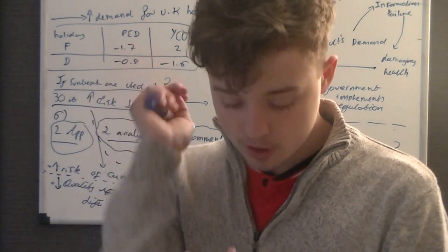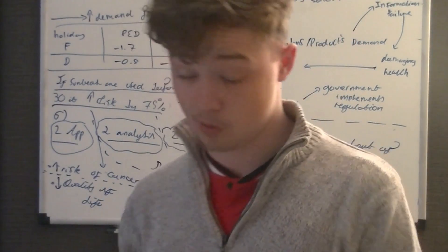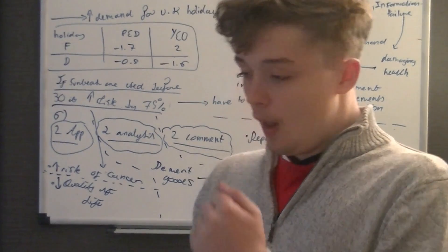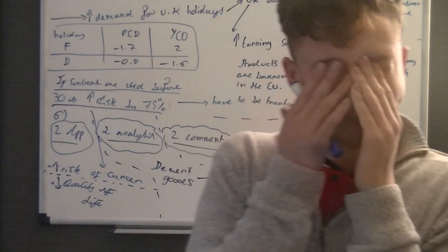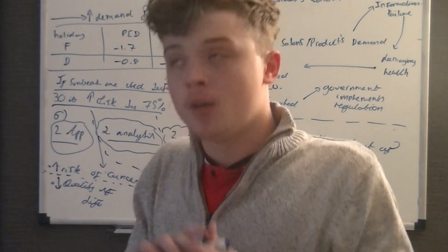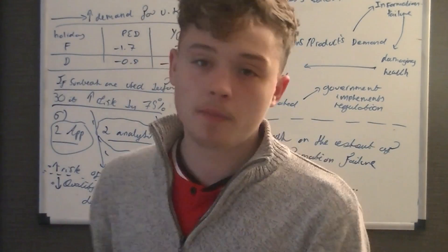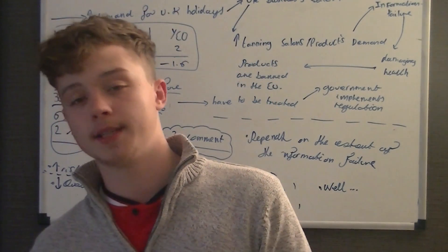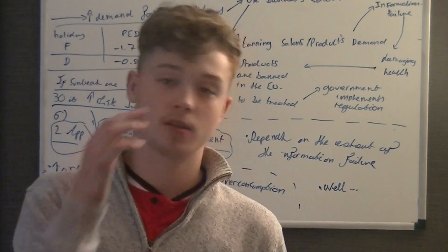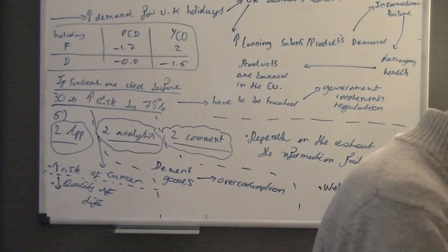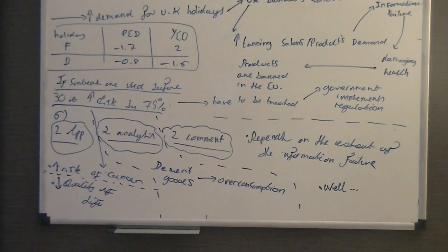So six marks. So two marks for application, two marks for analysis, two marks for comment. So comment is your judgment. So you say, you don't come up with a conclusion. You can do it all in one paragraph if you want to. So two marks for application. So you say yes, well, this is the problem: skin cancer and quality of life decreases. The demerit good is the over consumed. And this depends on the extent of the information failure or people acting on it or not. So that's your sort of overview of question six. I'll move out the way so you can load it down.